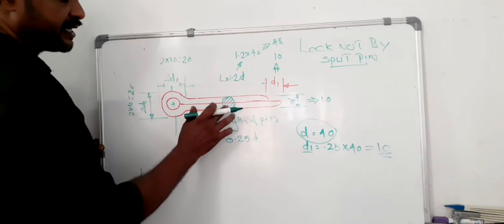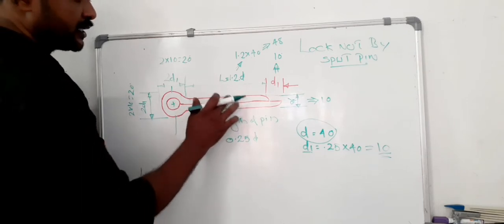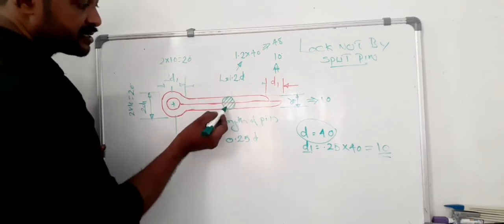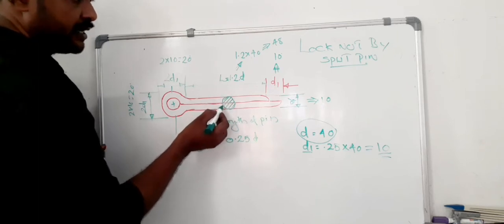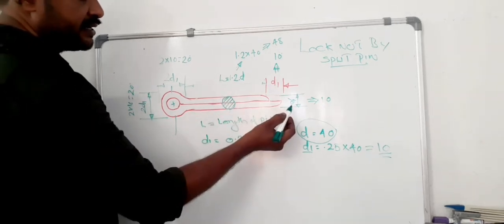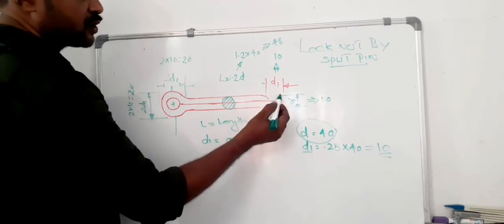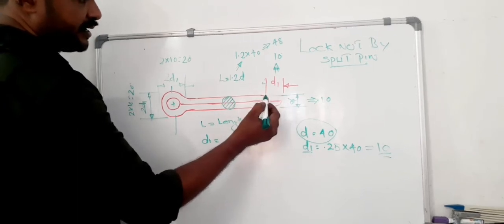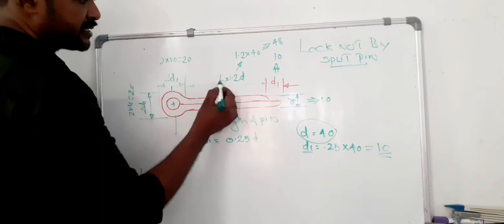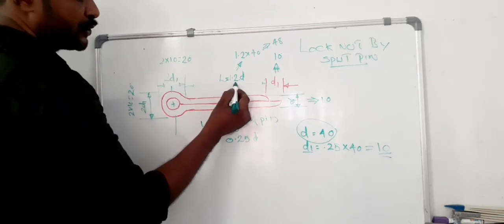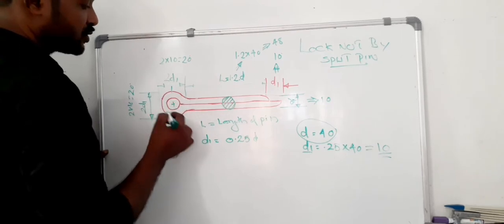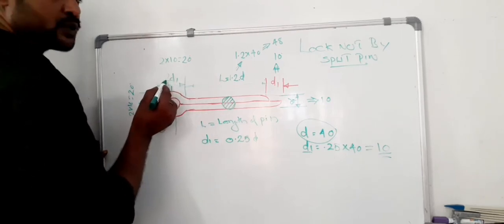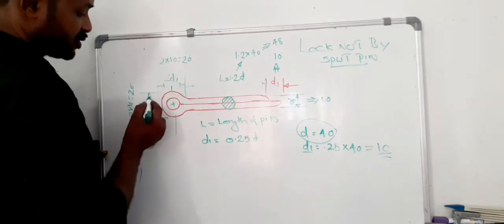From this figure we can understand it, this is a circular shape pin. Its value is d1, and this projecting length is also d1. This point to this point is marked as L, its value is 1.2d. The head diameter is also marked here, that value is 2d1, and this is also 2d1.